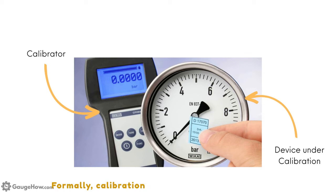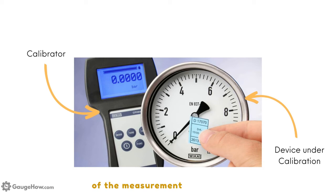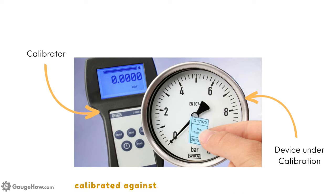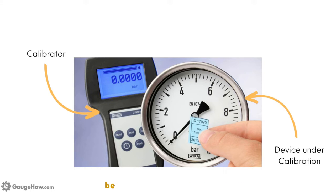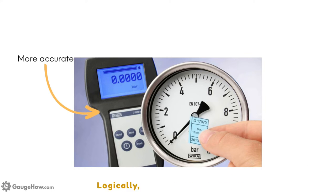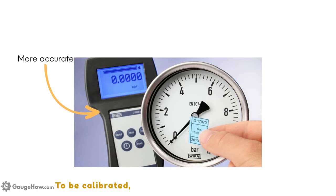Formally, calibration is the documented comparison of the measurement device to be calibrated against a traceable reference device. The reference standard may also be referred to as a calibrator. Logically, the reference is more accurate than the device to be calibrated, and the reference device should also be calibrated traceably.